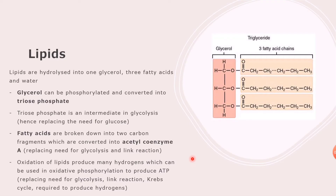Alternatively, the oxidation of lipids produces many hydrogens, as hydrogens are lost from the lipid. These hydrogens can be used in oxidative phosphorylation to produce ATP. Since glycolysis, the link reaction, and the Krebs cycle are performed primarily to produce hydrogens for oxidative phosphorylation, oxidizing lipids directly provides those hydrogens, replacing the need for all three stages. So lipids can replace glucose in three ways: phosphorylating glycerol, breaking fatty acids into two-carbon fragments, or oxidizing the lipid to produce hydrogens.